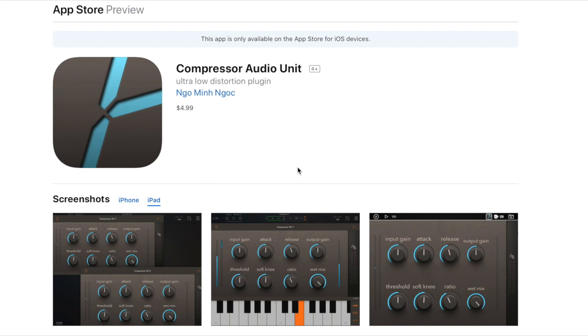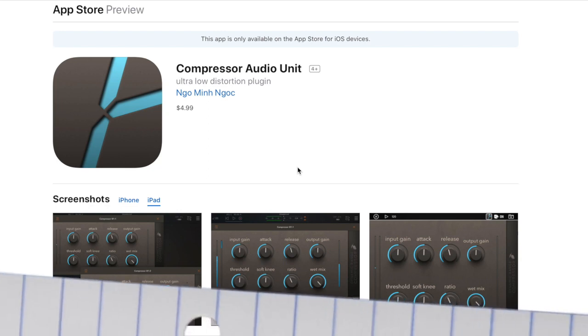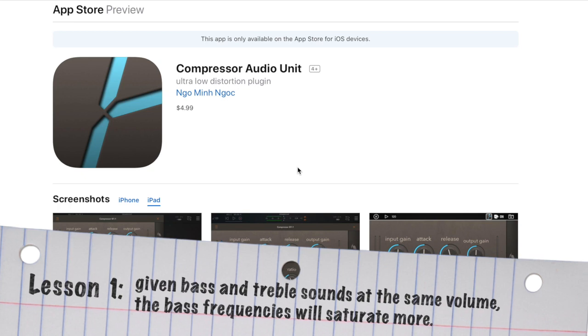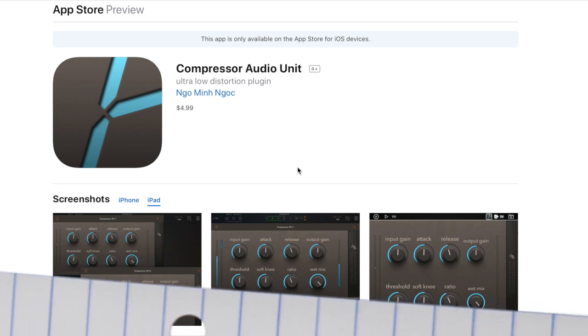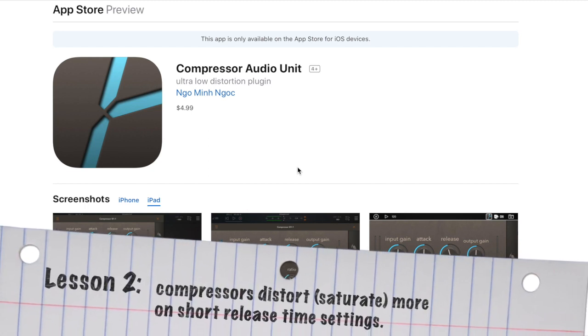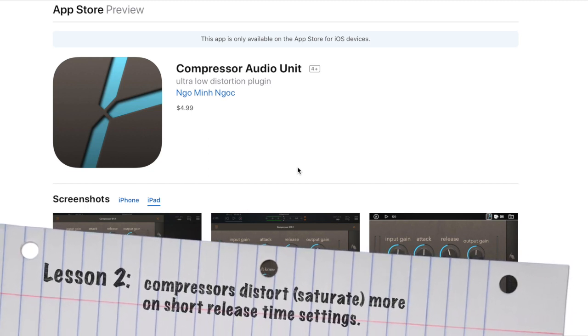The first one is that bass frequencies will be distorted more heavily by a compressor than high frequencies, and the second one which you'll see in a few minutes is directly related to the first. The release time controls the amount of distortion, specifically longer release times have less distortion and shorter release times have more.